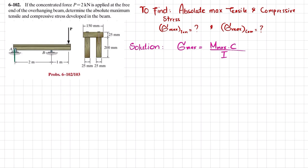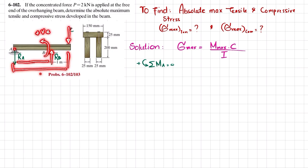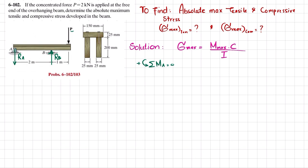Removing the support at A gives a reaction force R_A, and removing support at B gives R_B upward. Using equilibrium — sum of all moments about point A equals zero, taking counterclockwise as positive — we get: 2·R_B minus P·3 equals zero, where P is 2 kN. So 2·R_B minus 6 equals zero, giving R_B equals 3 kN.